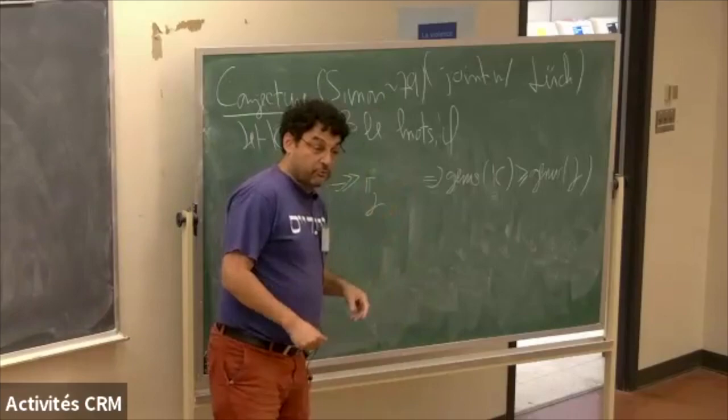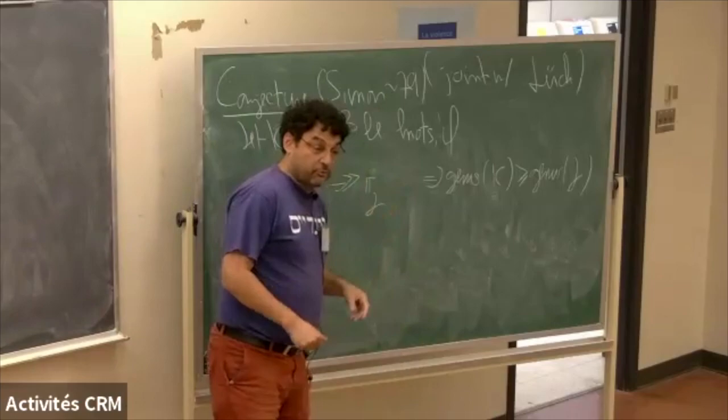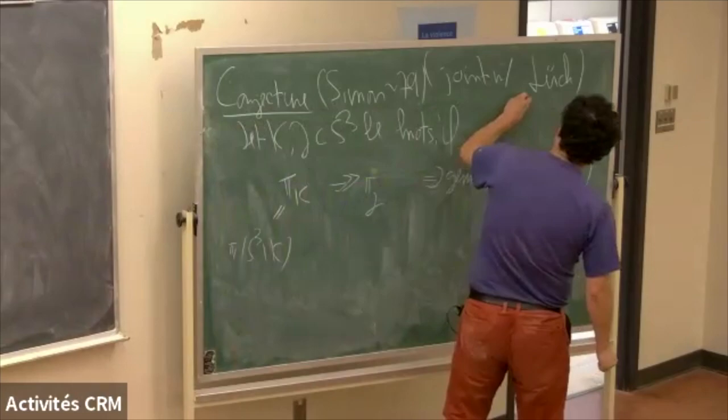The genus of a knot is defined as the minimal genus of a surface bounding K. So it's a simple statement: if there exists an epimorphism between the fundamental groups of the knot complements of K and J, then the genus of K has to be greater than or equal to the genus of J. We're talking about a paper which appeared last year, written a couple of years earlier.